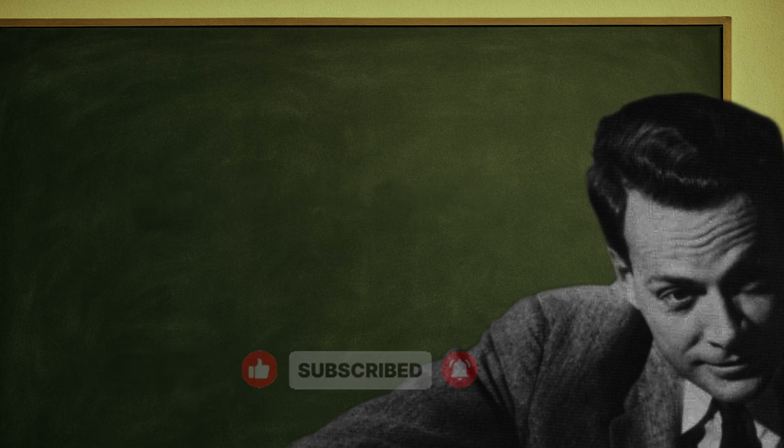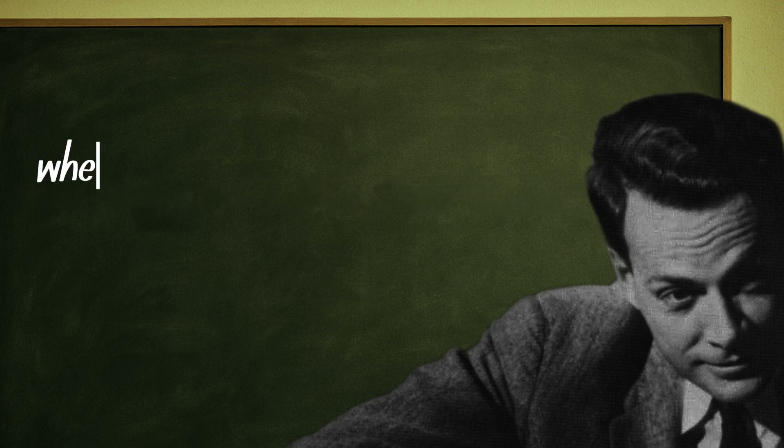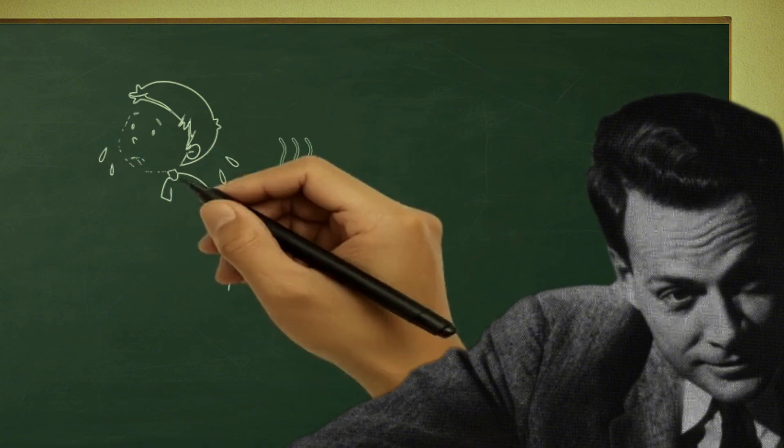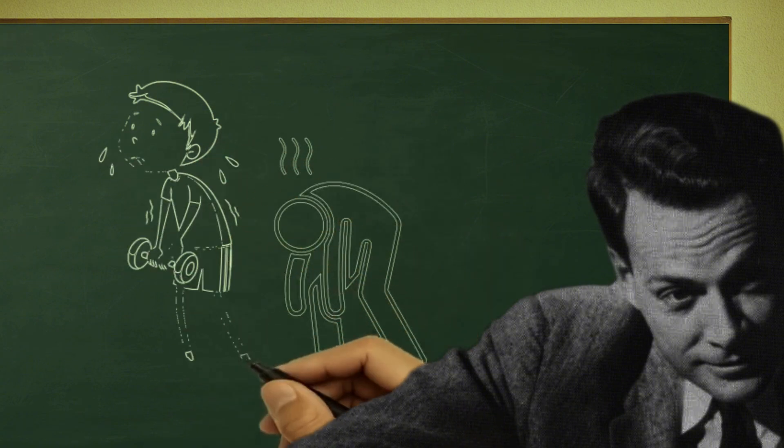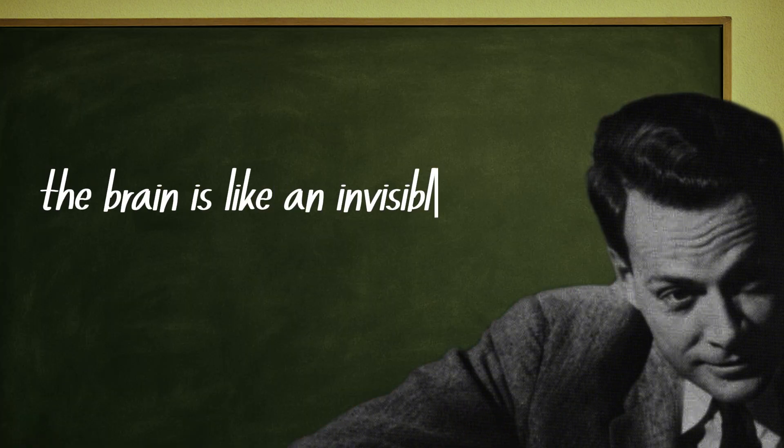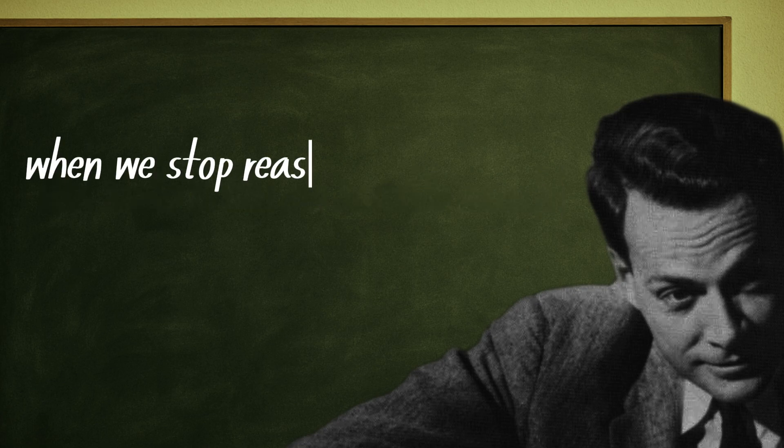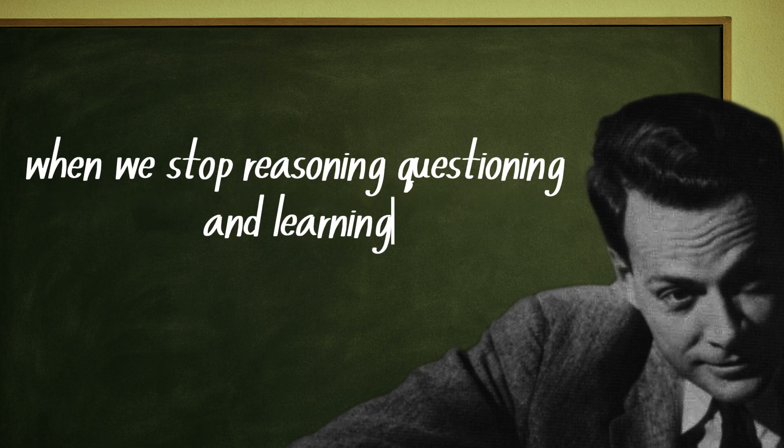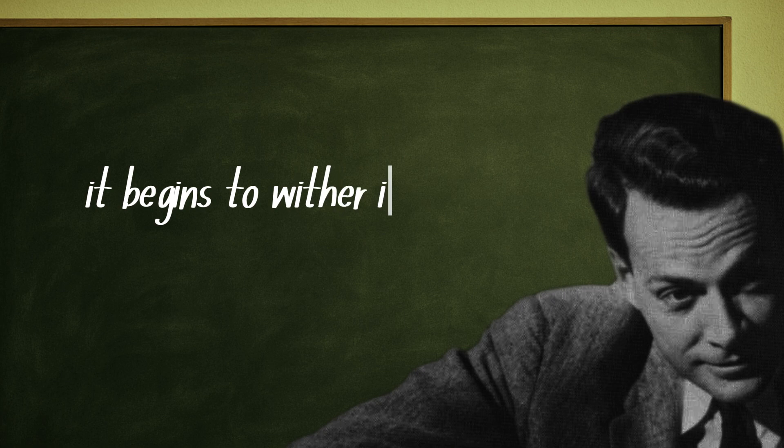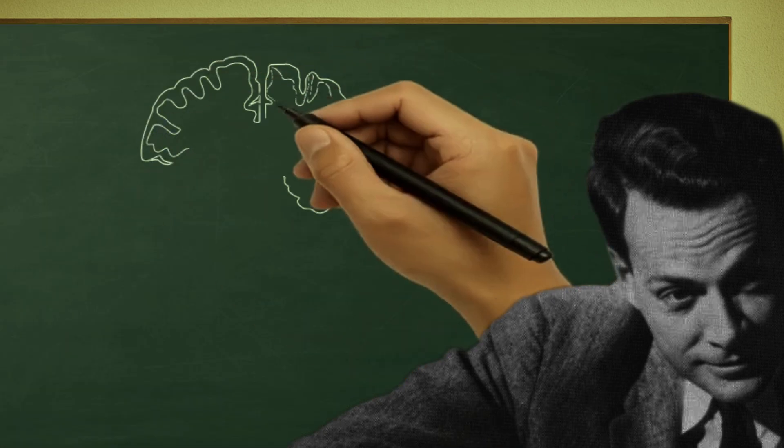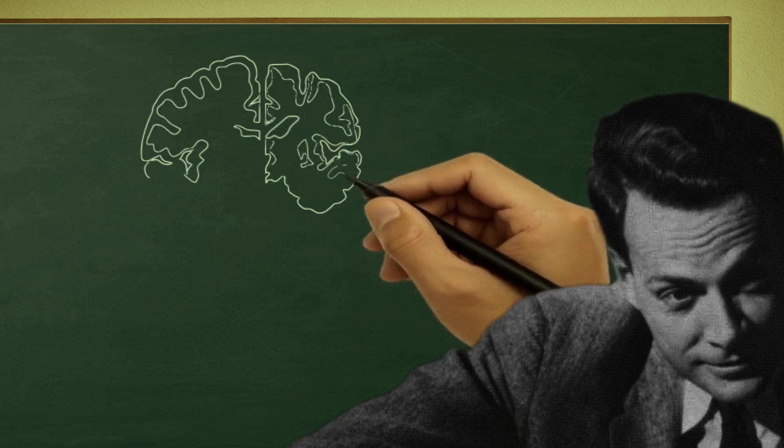You probably know that our bodies need constant stimulation. When someone stops training their muscles, what happens? They shrink. They weaken. They become fragile. The brain is like an invisible muscle. When we stop reasoning, questioning, and learning, it begins to wither in silence. The connections that support memory, logic, and creativity start to break down.